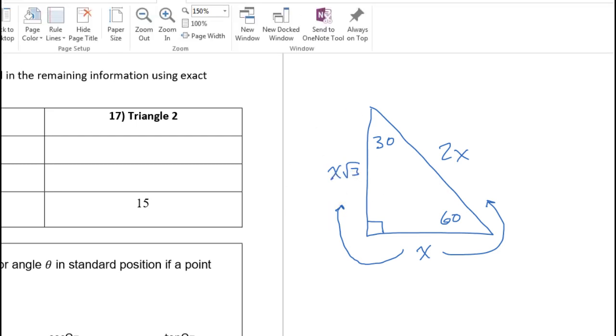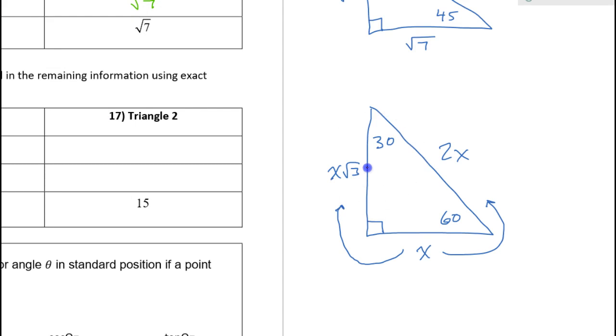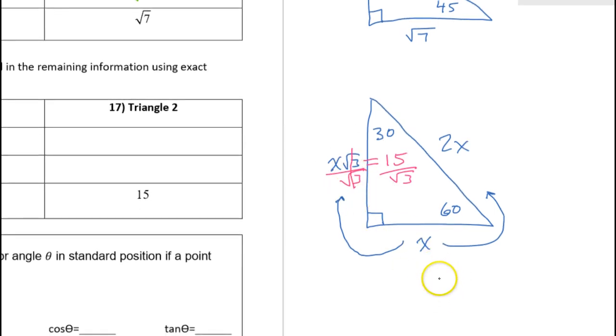Now in this case, we are told that the long leg is 15. That means x radical three must equal that 15 because that's the long leg. So I can solve this for x by simply dividing both sides by radical three. And this is one of those times where you should rationalize the denominator because three goes into 15. So the short leg is 15 over radical three.